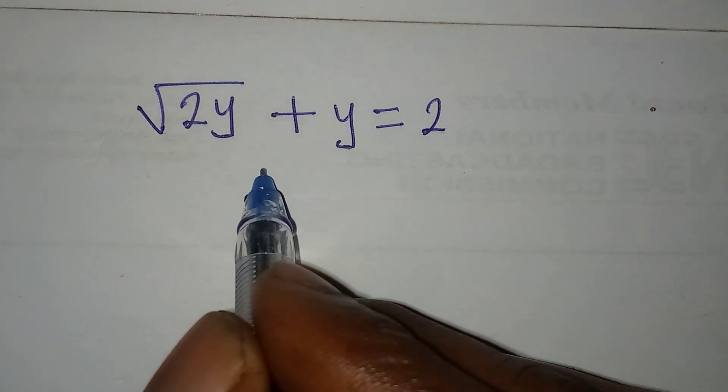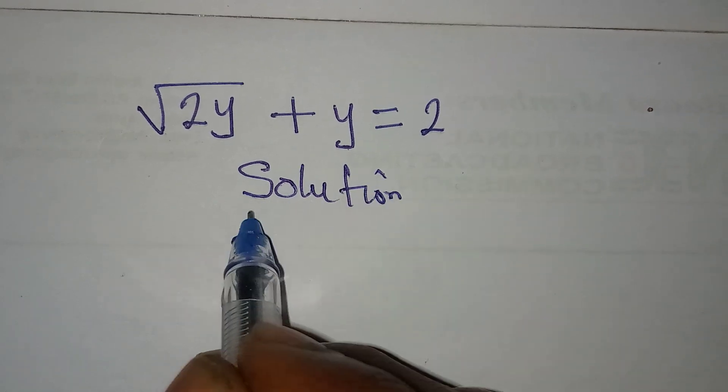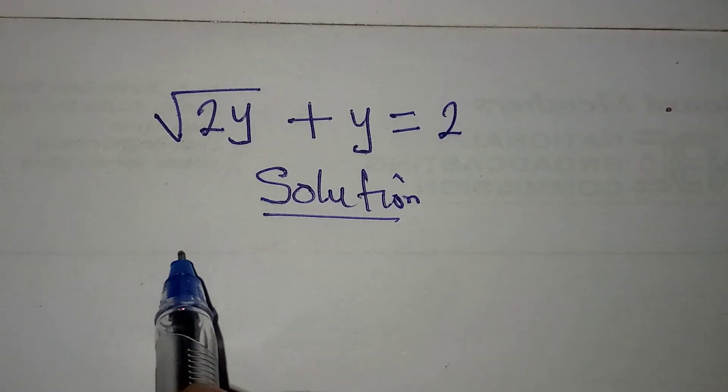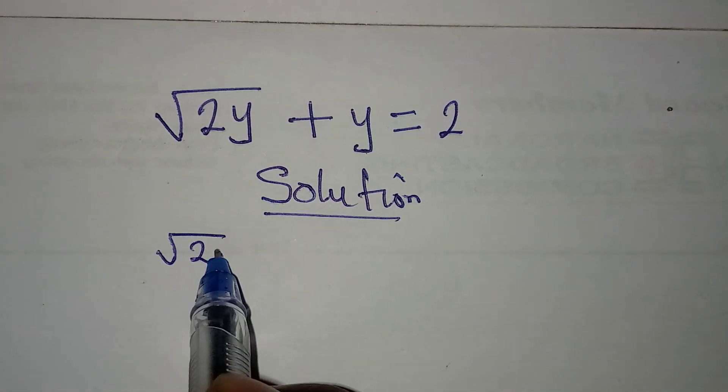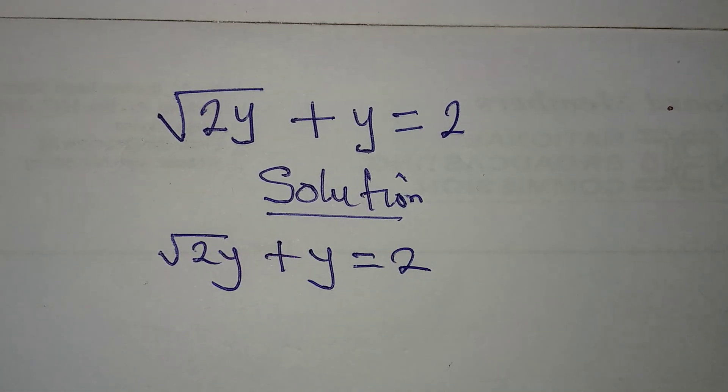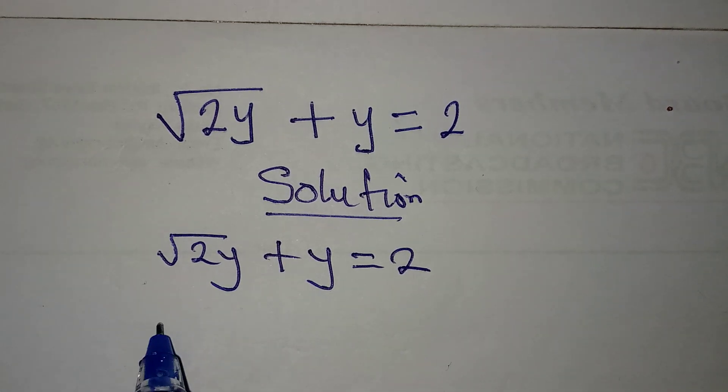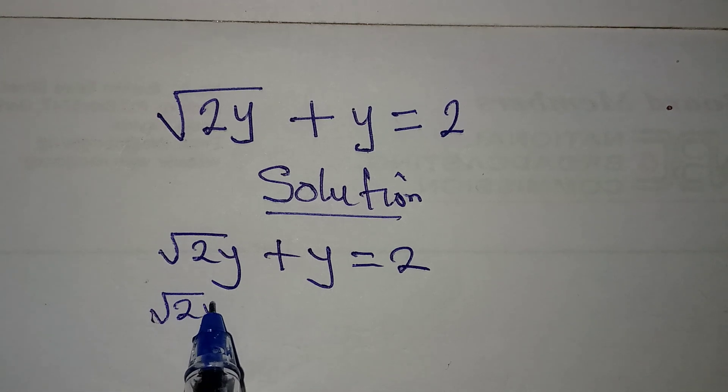Hello everyone, let's solve this problem. We have √2y + y = 2. The first thing is to make √2y the subject, so we have √2y equals 2 - y.